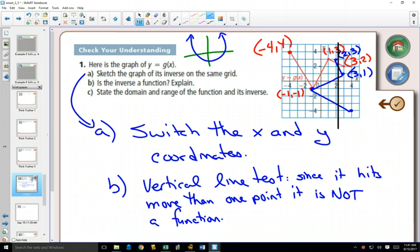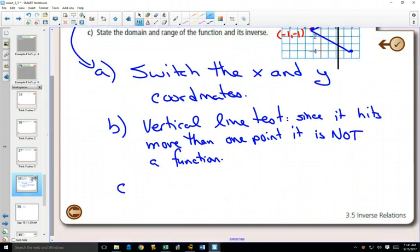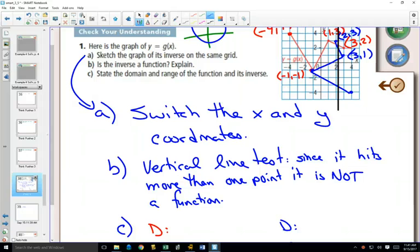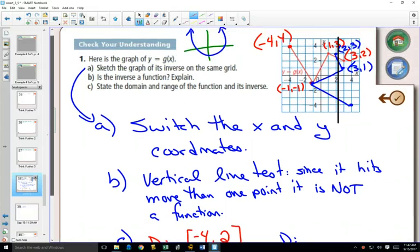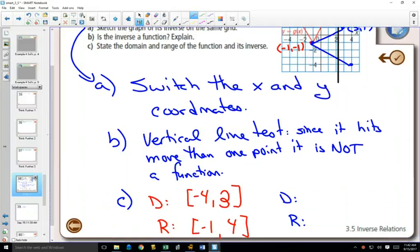Then part c, state the domain and range of the function and its inverse. So we'll do the function in red, domain and range. We'll do our function that we drew in blue. So I'm going to use interval notation here. Do we have a smallest x value on the red graph? Yes. Negative 4, our biggest x value, positive 2. So if our smallest value is negative 4 and that's included and our biggest value is 2. 3. Look at this. Nice recovery. We go from negative 4 to 3. And if the smallest y value is negative 1 and our largest y value is positive 4, our range goes from negative 1 to 4.